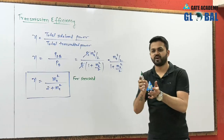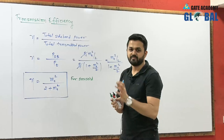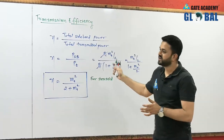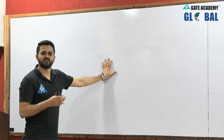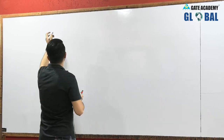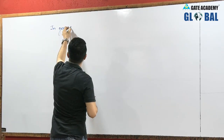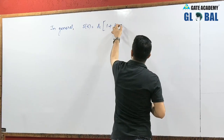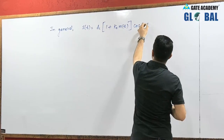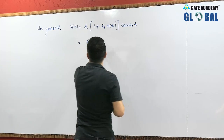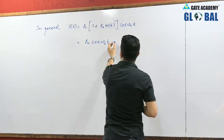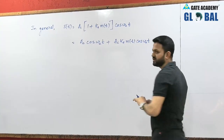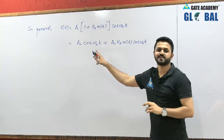Now we consider what happens for any general type of message signal. In general, the expression for an AM signal is S(t) = AC(1 + K·m(t))·cos(ωc·t). Expanding this gives a carrier term AC·cos(ωc·t) and a sideband term AC·K·m(t)·cos(ωc·t). The carrier power is PC = AC² / 2R.